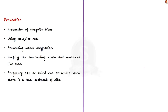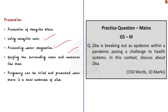Prevention of mosquito bites is an important aspect of preventing Zika virus spread. What can be done? We can use mosquito nets, prevent water stagnation, keep surrounding areas clean, and take other measures to reduce mosquito breeding. These are the points regarding Zika virus — we discussed the origin, transmission patterns, symptoms, complications including Guillain-Barré syndrome and microcephaly, and the lack of treatment for Zika virus.